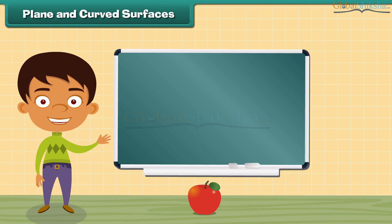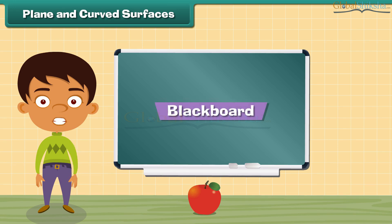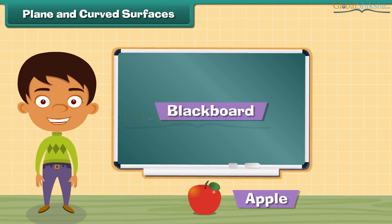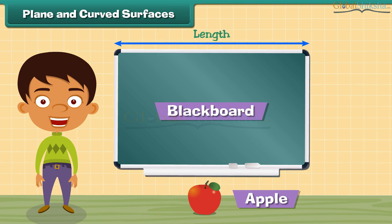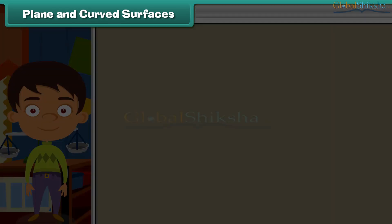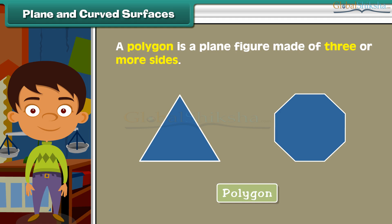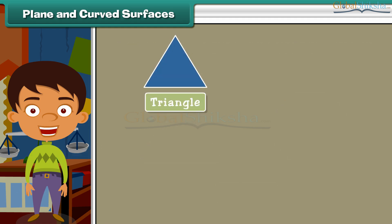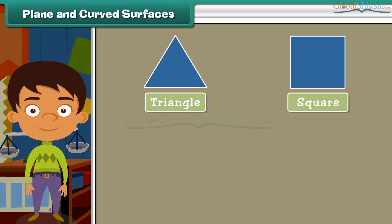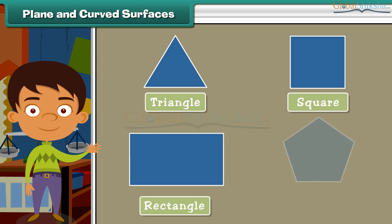A blackboard has plane surfaces — surfaces which have length and breadth. When you touch the surface of an apple, it is not straight; this is a curved surface. A polygon is a plane figure made of three or more sides. Various types of polygons include triangle, square, rectangle, and pentagon.